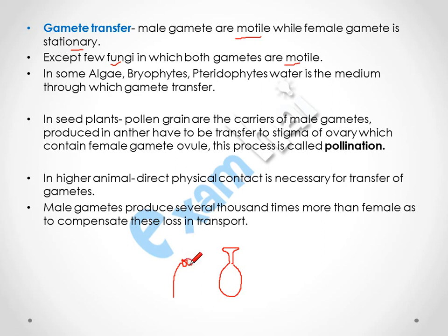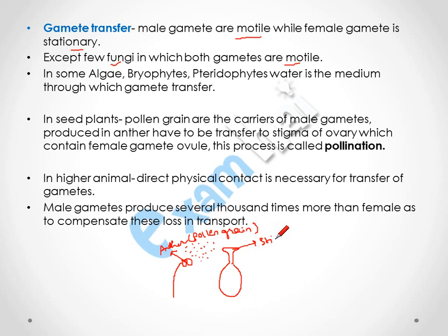In seeded plants like flowering plants, pollen grains are the carriers of male gametes. The anther of the stamen produces pollen grains, which are transferred to the stigma of the female reproductive organ (pistil/ovary) through wind, water, insects, and various other agents. This transfer of pollen grain to the stigma, ultimately reaching the ovules, is called pollination.